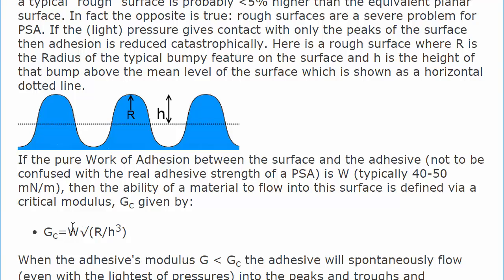You can't do much about W, because the work of adhesion on PE is something like 30, and on a nicely corona treated surface, it'll be something like 45. So there's not much you can do there. The roughness, if the radius is large, i.e., if it's a slowly undulating roughness, then this will be a large value, so that's easy to be less than. And if the height is large, then this will be a small value, so big, high roughnesses are very bad.